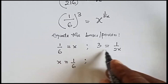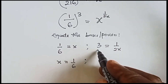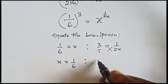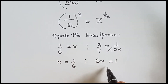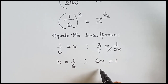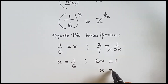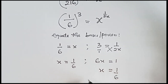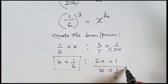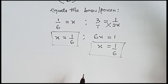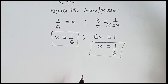From the powers equation we can also find x. Let's cross multiply: we have 6x equals to 1, and when we divide both sides by 6, we have x equals to 1 over 6. x equals to 1 over 6 from both equations, which means our answer x is 1 over 6.